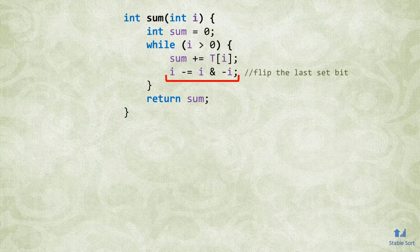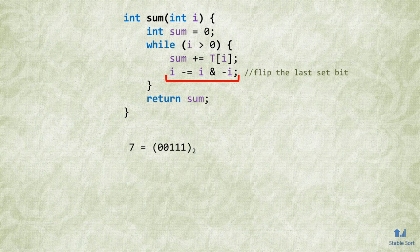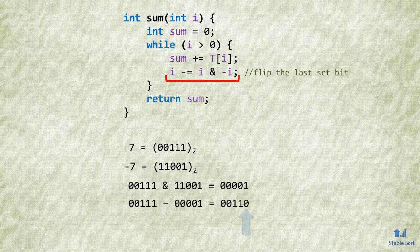Going back to the line of code that flips the last set bit of i, let's walk through an example. The number 7 in binary encoding is 00111. The number negative 7 is 11001. This is how most computers store negative numbers. This encoding scheme is called 2's complement, and it's calculated by flipping all of the bits and then adding 1. Finally, subtracting from the original value flips the rightmost set bit from 1 to 0.